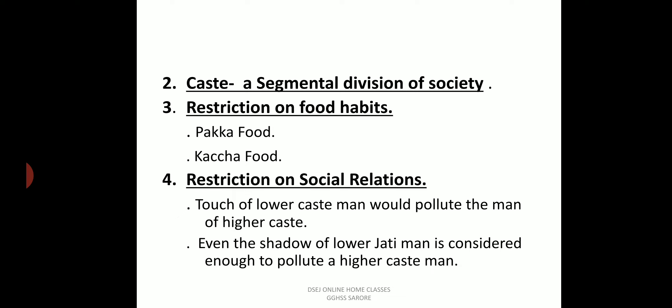Brahmin people believed that even the shadow of a lower caste person falling on them would make them impure — they would need to bathe to purify themselves. For example, in Kerala, a Nair could approach a Nambudiri Brahmin but was not allowed to touch him and had to maintain a distance of several meters before speaking.